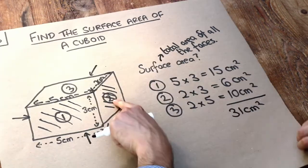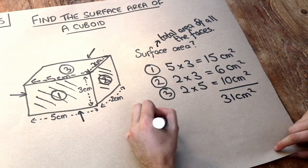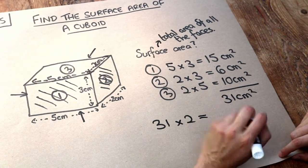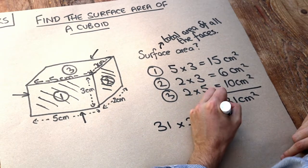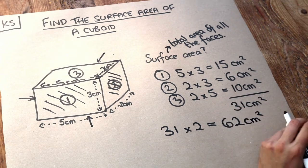But each of these faces is going to appear twice. And therefore if we just double that area, that allows us to duplicate each of the faces to get the total area, which is going to be 62 centimetres squared.